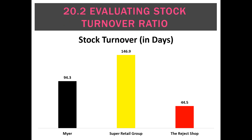Looking at some data from last financial year: Myer has an average turnover of 94 days; Super Retail Group's Super Cheap Auto is 147 days; and the Reject Shop is 45 days basically. And that makes sense — the Reject Shop buys cheap stuff and sells it cheap, so they're going to try to sell it very quickly. Myer sells a wide range of things at generally much higher prices, so it makes sense their goods take longer to turn over. And Super Cheap Auto sells a lot of things costing thousands of dollars — like rooftop carriers, stereos and similar big products — so a much longer stock turnover in days is probably acceptable.